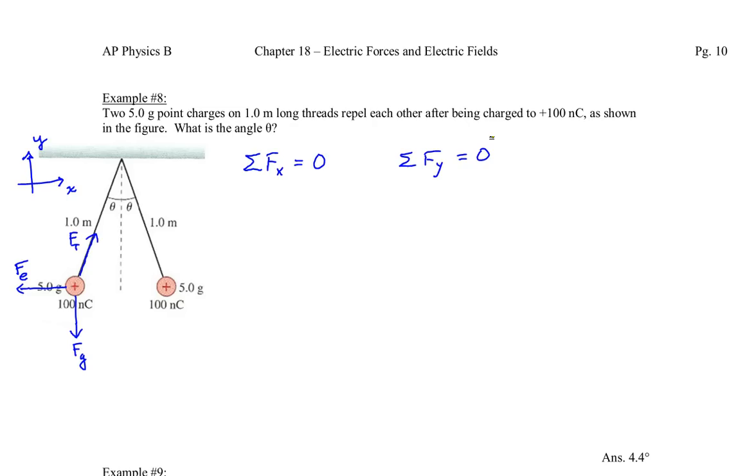So along the x-axis we have something cancelling out. We have that electrostatic force going to the left, and then that tension partly going up and to the right, so the horizontal component of Ft, so that would be Ftx, must be balanced out by the electrostatic force, that's equal to zero.